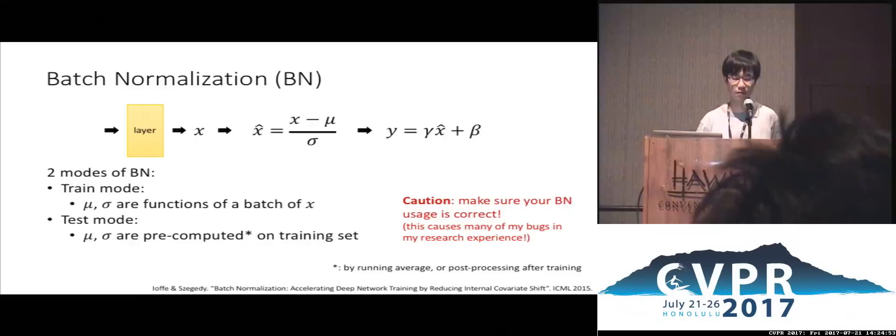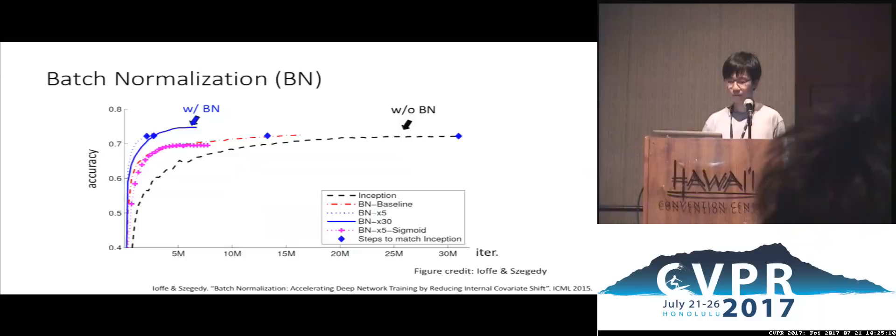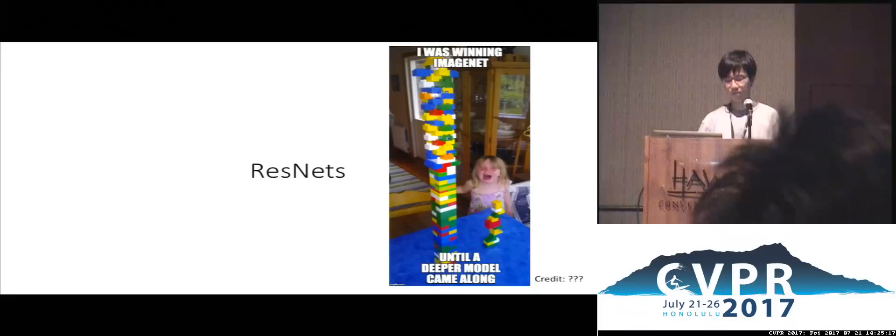Now we are ready to introduce ResNet. We have good initializations and batch norm — so why can't we still train even deeper neural networks? We introduced the concept of a plain network, which is just repeatedly stacking 3×3 convolutional layers, and trained this on CIFAR-10. We trained a 20-layer and a 56-layer version. Surprisingly, the deeper version is not better than the shallower version.